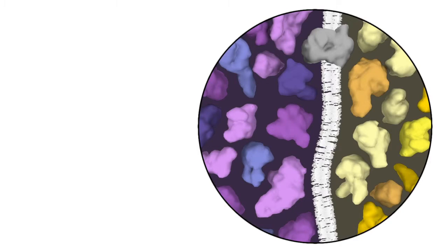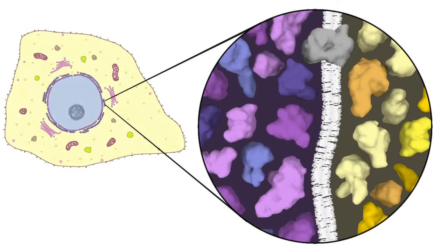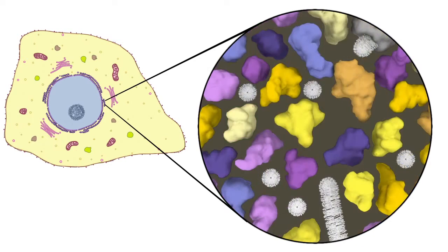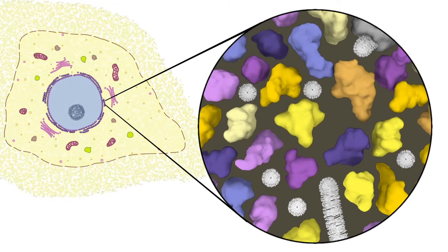In the Western blotting procedure, proteins are first isolated from the rest of the cell's components. To extract proteins from cells, researchers use chemical-based and/or physical-based methods to disrupt the cell's plasma membrane and release the proteins inside it.